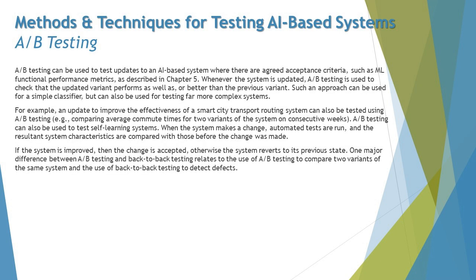A/B testing can be used to test updates to an AI-based system where there are agreed acceptance criteria, such as ML functional performance metrics covered in Chapter 5. Whenever the system is updated, A/B testing is used to check that the updated variant performs as well as or better than the previous variant. This approach can be used for a simple classifier but also for far more complex systems.